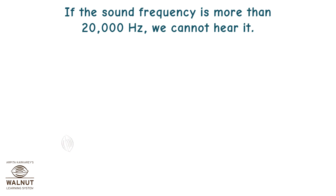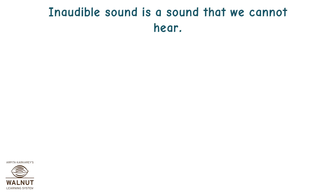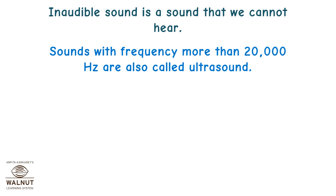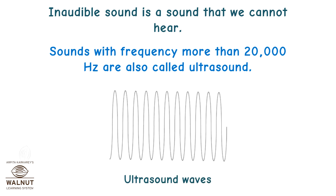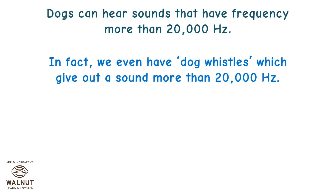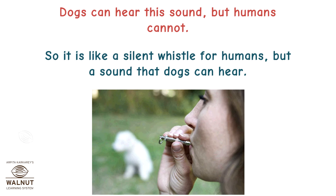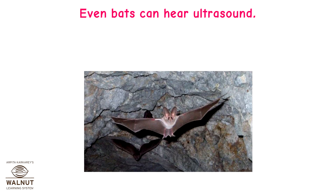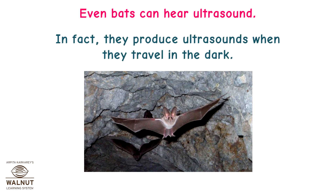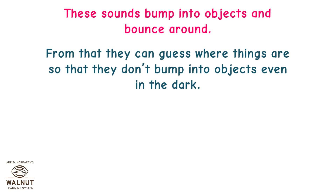If the sound frequency is more than 20,000 Hz, we cannot hear it. Sounds with frequency more than 20,000 Hz are also called ultrasound. Dogs can hear sounds that have frequency more than 20,000 Hz. In fact, we even have dog whistles which give out a sound above 20,000 Hz — dogs can hear this sound but humans cannot. It is like a silent whistle for humans but a sound that dogs can hear. Even bats can hear ultrasound — in fact, they produce ultrasounds when they travel in the dark. These sounds bump into objects and bounce around, allowing bats to guess where things are so that they don't bump into objects even in the dark.